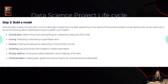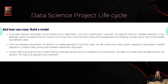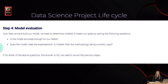Characterization — creating plots, graphs and various reports for understanding the data better. Bad loan use case — Build a model. In the bank scenario, the problem we are dealing with is classification. We wish to classify bank customers who apply for loans as probable defaulters or non-defaulters. We need to train our model so that it covers the entire range of available data, enabling it to learn about most probable loan defaulter cases. We can choose from logistic regression, naive Bayes, K-nearest neighbors, or decision trees, among other classification techniques. We also need to be aware of why a model is taking a particular decision and how confident it is in its prediction. Ultimately, our model should be able to answer: how likely is an applicant to be a defaulter?